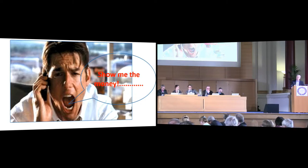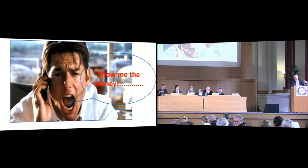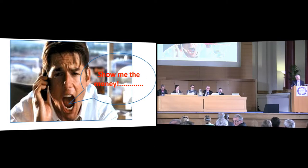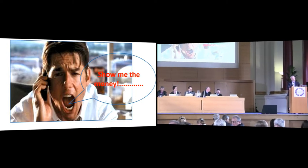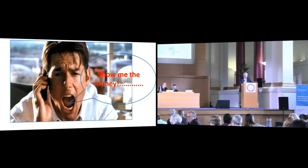If you've seen the film you'll know there's a particularly key moment. He's playing a sports agent and this agency is exploiting their sports stars. Jerry Maguire wants to come with a new ethical model for his sports stars, and he gets left with one sports star who's totally fine with his new ethical model but can't stop saying 'show me the money' — wanting to see where his money is coming from and what it will mean for him when he retires.